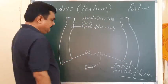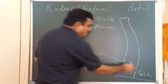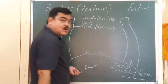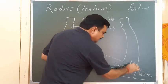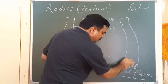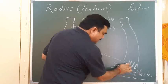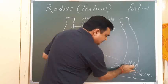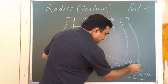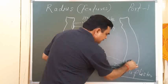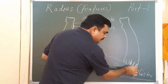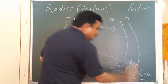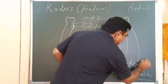On the posterior surface there are four grooves for the extensor tendons. Here is the first group, second group, third group, and fourth group. The Lister tubercle is also on the posterior surface.